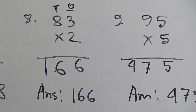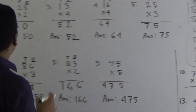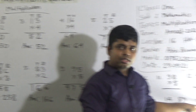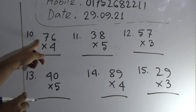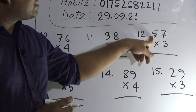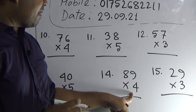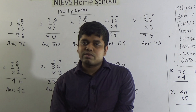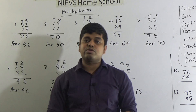I hope you have understood today's lecture on multiplication. By using the knowledge from solving problems 1 to 9, you have to practice question numbers 10 to 15. The problems are written on the board — please copy them: 76 multiplied by 4, 38 multiplied by 5, 57 multiplied by 3, 40 multiplied by 5, 89 multiplied by 4, and 29 multiplied by 3. You must do your assigned work in your SW copy and submit it regularly at school every Saturday between 9 AM and 3 PM. Keep practicing at home. Assalamu alaikum.